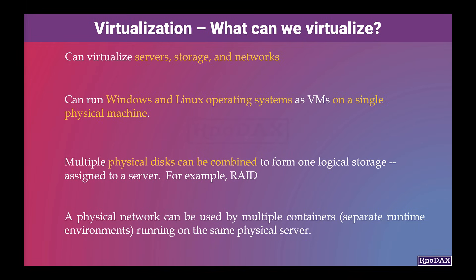Each VM would have its own RAM, storage, and network. Not only can we run multiple separate operating systems on the same physical server using virtualization, but we can also run multiple applications in a completely separate, isolated environment on the same physical machine. This type of virtualization is called containerization — for example, Docker containers.